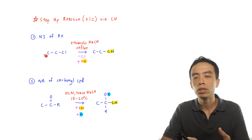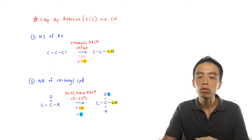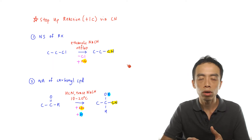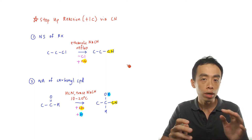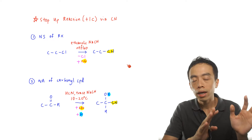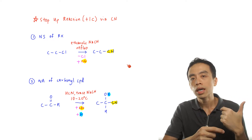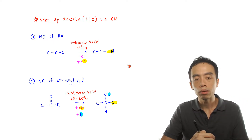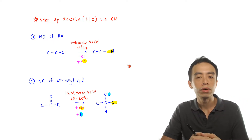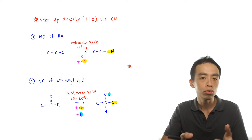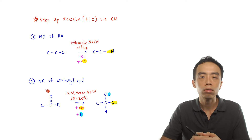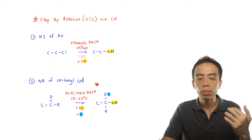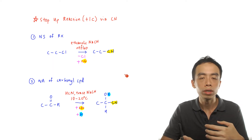Now this is important: the step-up reaction that we should be using is dependent on the functional group that you want to end up getting — it is not dependent on what the starting functional group is. So what we have to do is look at the product, and we systematically work backwards, and we figure out: should I do this step-up reaction via nucleophilic substitution of haloalkane, or via nucleophilic addition of carbonyl compound?